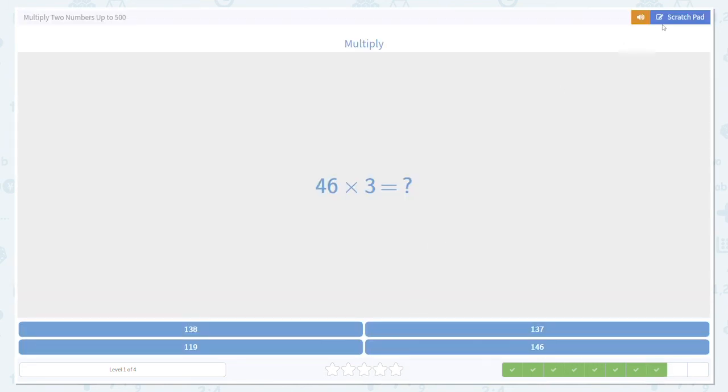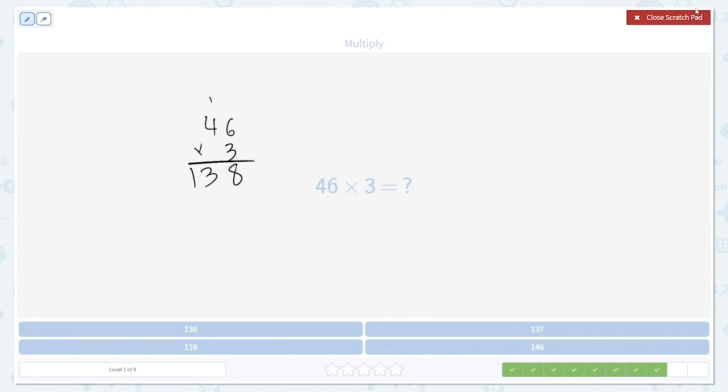A couple more examples here. 46 times 3. As always, big number goes on top. 46 times 3. 6 times 3 is 18. 8 down here. 1 up top. 3 times 4 is 12. Plus 1. 13. 138.